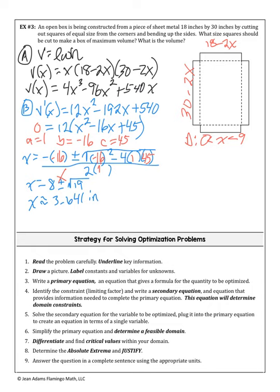Now test that x value. Our critical value is 3.641. Part c: substituting the exact value x = 8 − √19 into the volume formula gives approximately V ≈ 886.552 cubic inches. Part d: justify using the first derivative test. Enter the derivative into the calculator's y= and use the table feature.